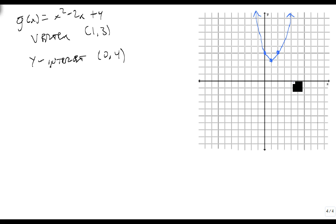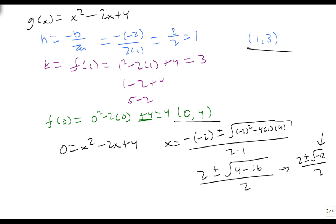And notice it didn't cross this line, which is why we found that it had imaginary x-intercepts. So an imaginary x-intercept means that it's not really there on the real number line. And that's how we graph using properties.